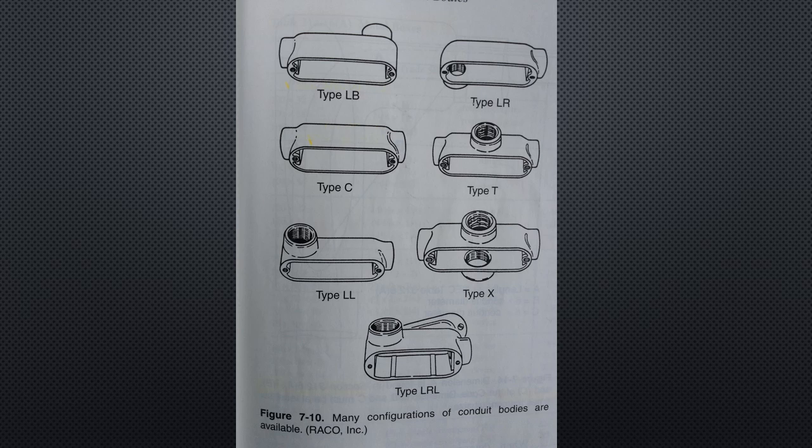Boxes and conduit bodies must be large enough to provide adequate free space for the conductors entering and exiting. If the enclosure is too small, the ambient temperature around the conductors becomes too hot. This weakens insulation and increases resistance. Carefully read section 314.16 C2 to determine if a splice or tap is allowed in a conduit body. Section 314.5 specifically forbids splices, taps, or devices in short radius conduit bodies, capped elbows, and service entrance elbows.